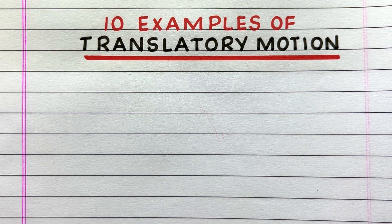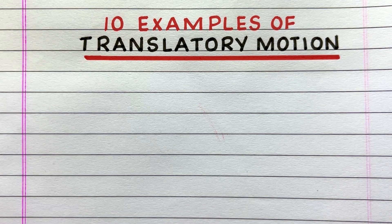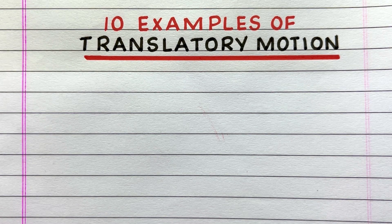Hello everyone, welcome to my channel. Translatory motion occurs when an object moves along a straight or curved path without rotating. In this video, I'll write 10 examples of translatory motion. Let's get started.